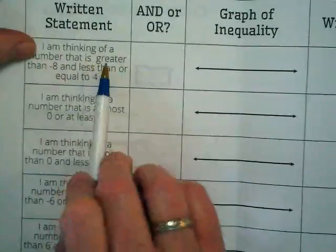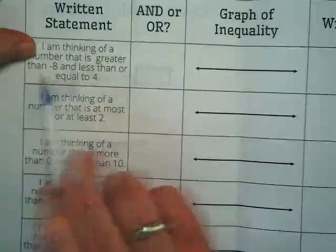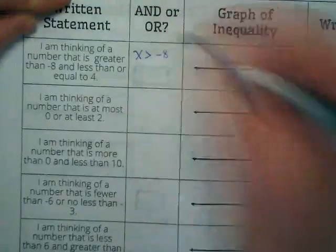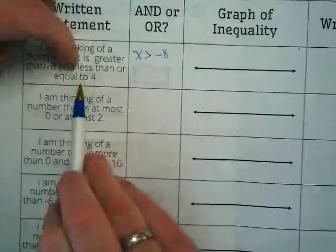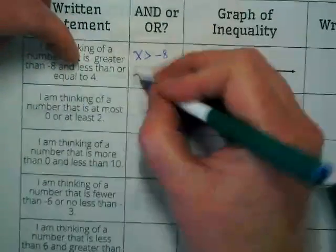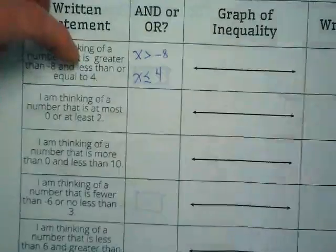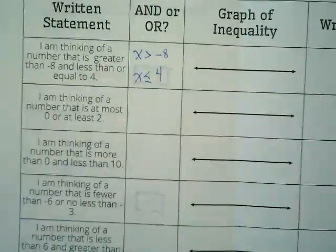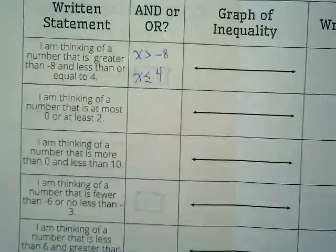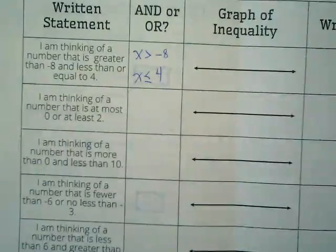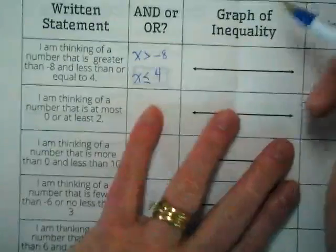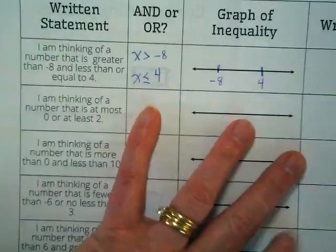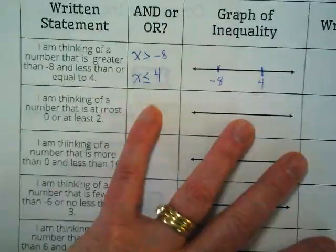I am thinking of a number that is greater than negative 8 and less than or equal to 4. So let's just say x is greater than negative 8 and x is less than or equal to 4. Can you graph those two things on your line? And you're going to decide if it's an and or an or by the kind of line we get. An and is going to be that line between them and an or is going to shoot off into both directions. So let's graph it and find out. Let's put negative 8 down here, positive 4 here. I'm going to use orange, I'm not color coding, I'm just using something easier to see.